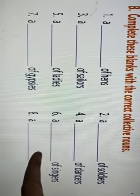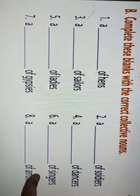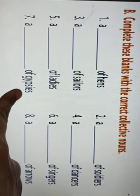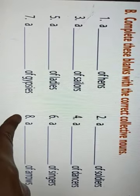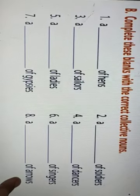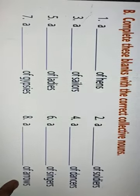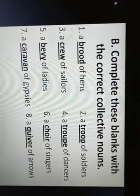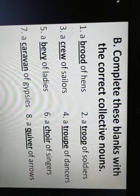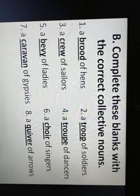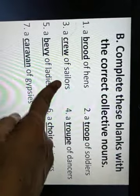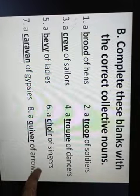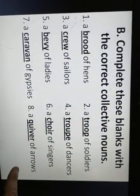Sixth: a blank of singers — a 'choir.' Seventh: a blank of gypsies — a 'caravan.' Eighth: a blank of arrows — a 'quiver.' You can pause the video and copy the answers. To summarize: a brood of hens, a troop of soldiers, a crew of sailors, a troop of dancers, a bevy of ladies, a choir of singers, a caravan of gypsies, a quiver of arrows.